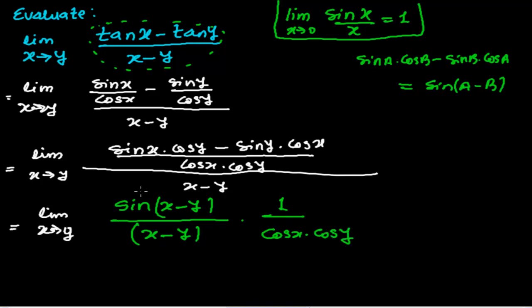I separated it this way because I can now see the standard form: sin(x − y) divided by (x − y) matches the standard limit form sin θ over θ, where (x − y) is acting as the angle θ.